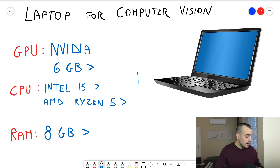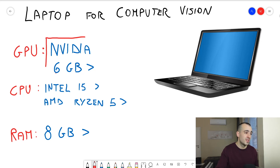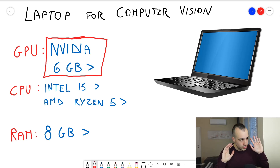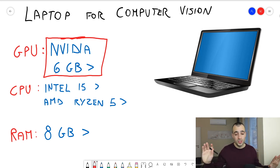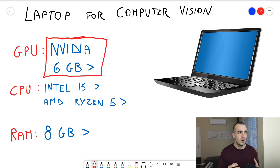Those are the three most important components your laptop needs for computer vision. But what is the single most important component? If you can choose only one thing to focus on, it's NVIDIA with at least 6GB of memory. If you're not sure what to do, just buy a laptop with an NVIDIA graphics card with 6GB of memory and you'll be going in the right direction. To make things simpler, let's look at some laptop examples.